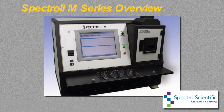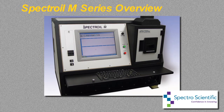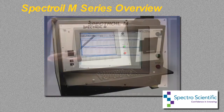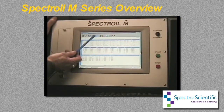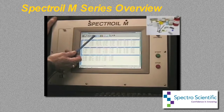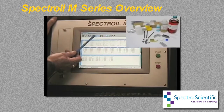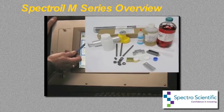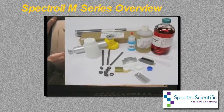The Spectroil is a compact, rugged, transportable, and easy-to-use spectrometer designed specifically for the analysis of oil samples. It measures trace quantities of elements dissolved or suspended as fine particles in natural or synthetic petroleum-based products using the time-tested and reliable rotating disk electrode technique.